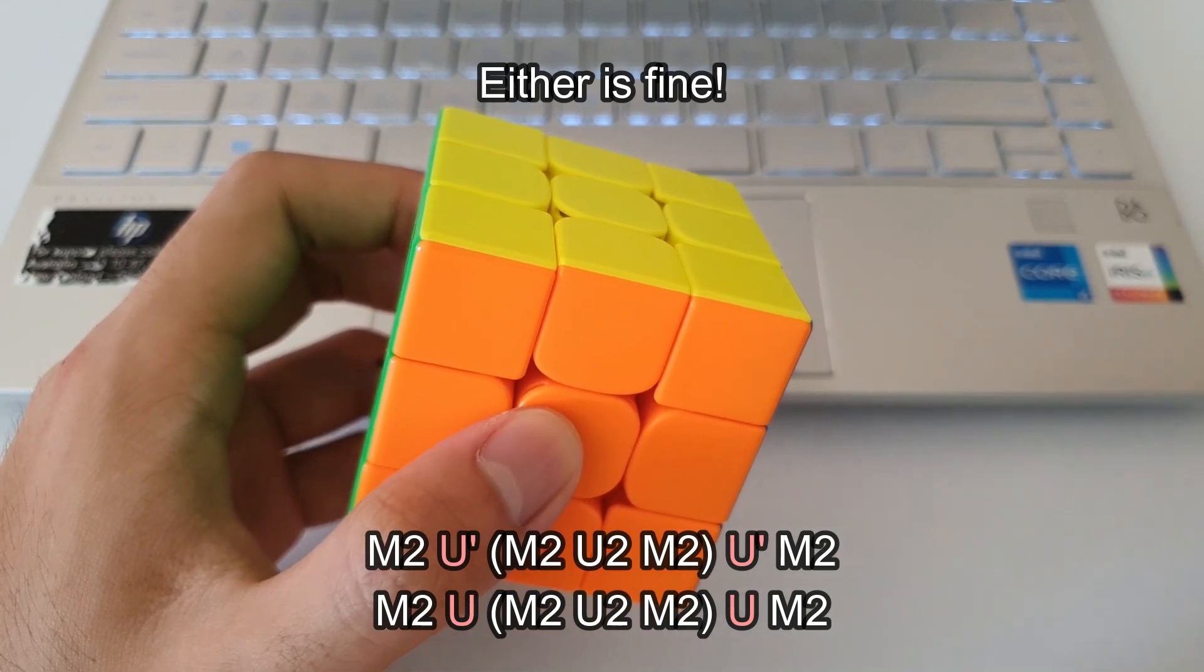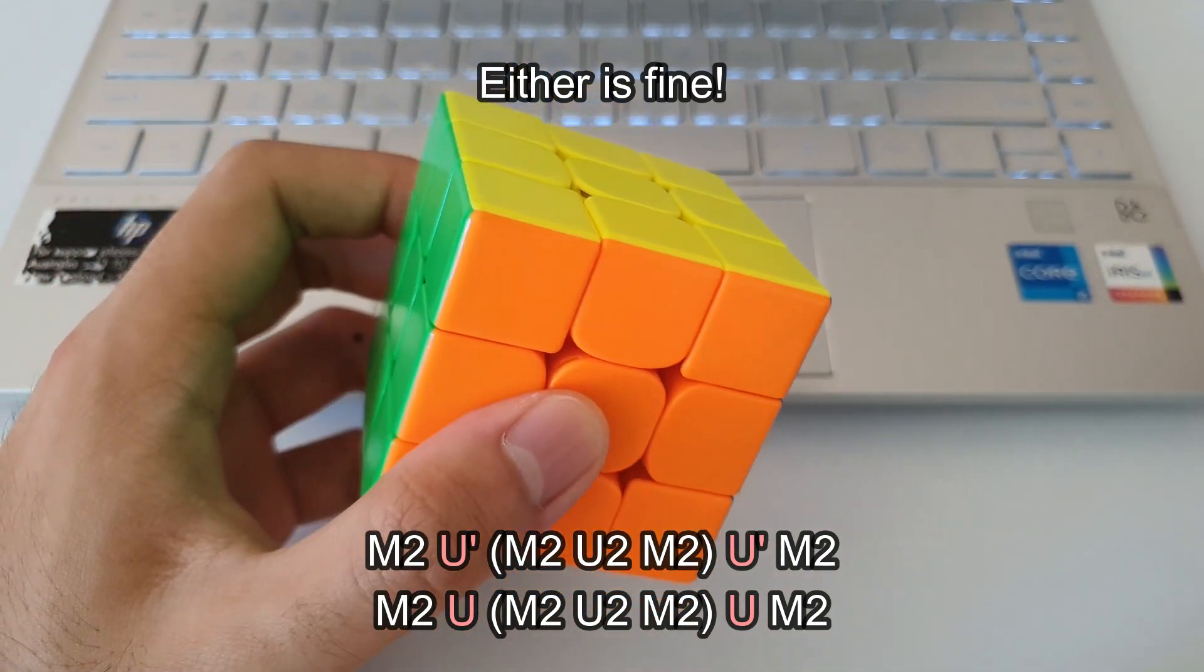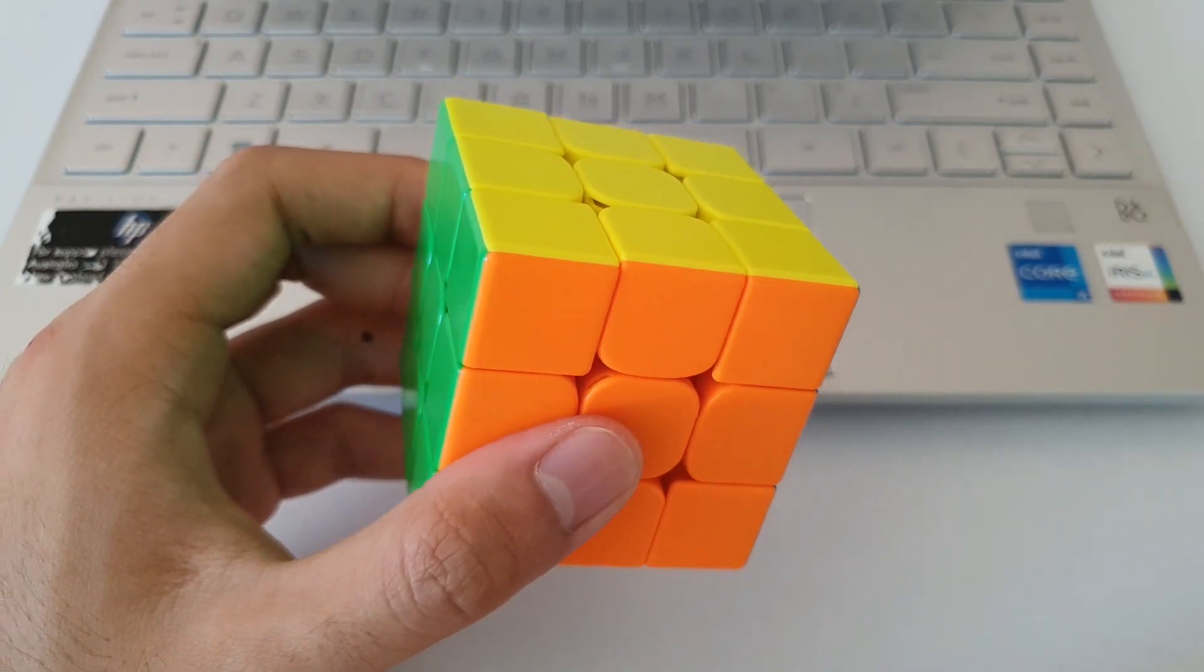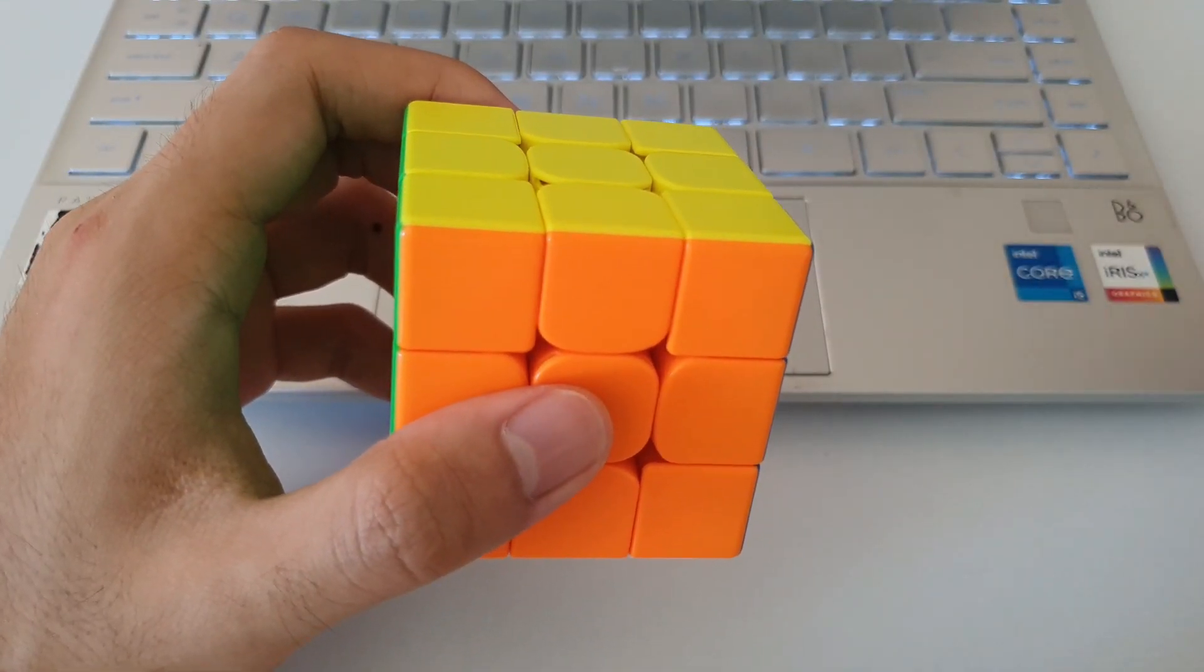And that also solves the case. So the U's and U prime can change depending on which one you're more comfortable with, depending on which hands you use for what moves.